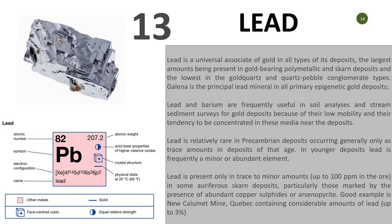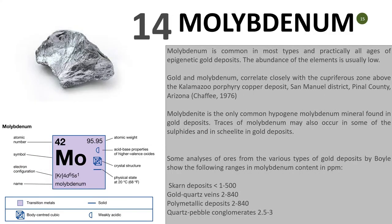Number thirteen is lead. Lead is very frequently useful in soil analysis and stream sediment surveys for gold deposits because of its low mobility and tendency to be concentrated. Lead is present mainly in trace to minor amounts, up to 100 ppm, even more in some other deposits. Work in the field has shown lead elements occurring in the neighborhood of 300 to 400 ppm. Lead is definitely something to look at.